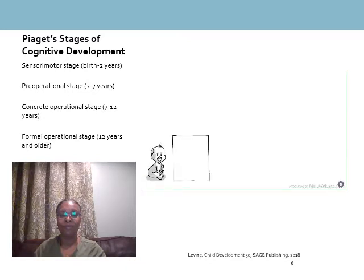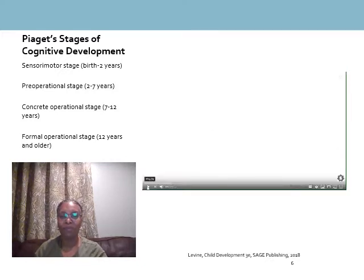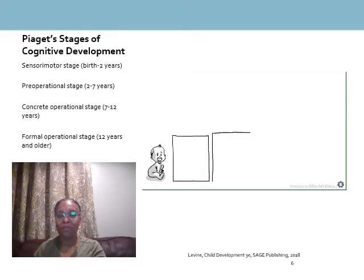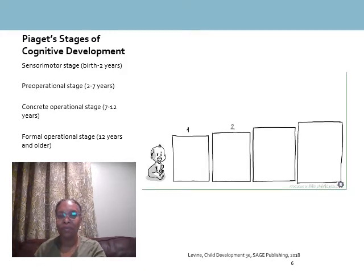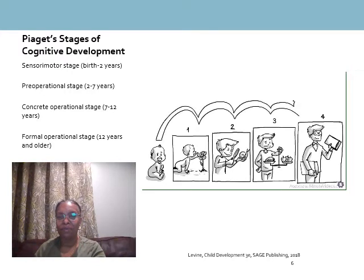Piaget's theory argues that we have to conquer four stages of cognitive development: first, the sensorimotor stage; second, the preoperational stage; third, the concrete operational stage; and fourth, the formal operational stage. Only once we have gone through all the stages — at what age can vary — are we able to reach full human intelligence.